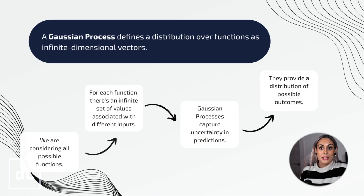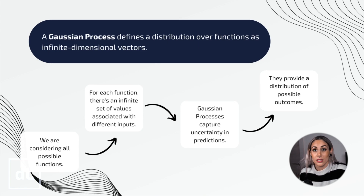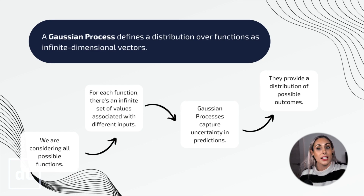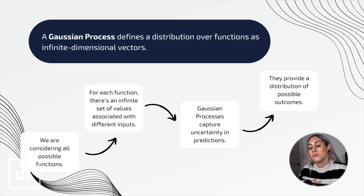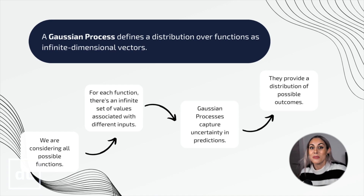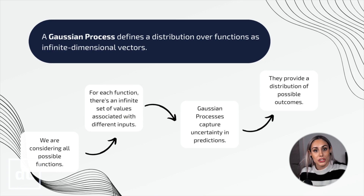Another way of understanding a Gaussian process is as a distribution over functions, where each function can be thought of as an infinite-dimensional vector. Imagine you have a set of limited data points representing the temperature at a city at different times of day over the past month. Now you want to make predictions for the temperature at different times where you don't have data points. We don't know what happens between some of these points — in other words, there is some uncertainty. So first, you can consider lots of possible curves that could go through those dots: really wiggly ones, really smooth ones. Then, when we want to make a prediction, we want to ask ourselves what's the most likely function that goes through that, while being aware that we don't have all the information.